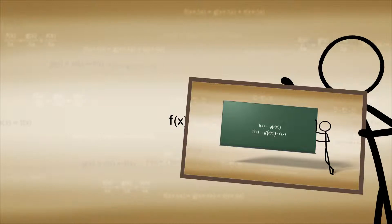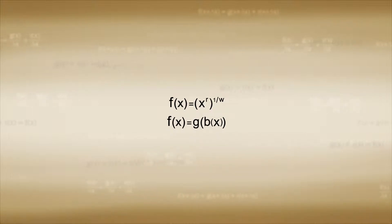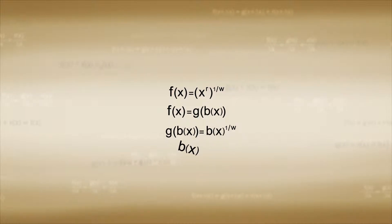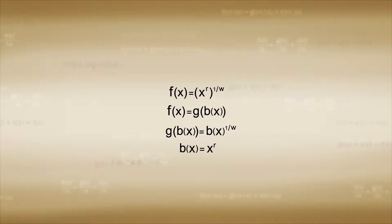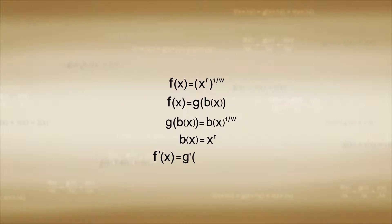This reminds us of the case where f of x was represented by a function of a function. For this reason, we can say that f of x is equal to g of b of x, where g of b of x is b of x raised to 1 over w, and b of x is equal to x raised to the power of r. The derivative f prime of x is equal to the product of g prime of b of x and b prime of x.